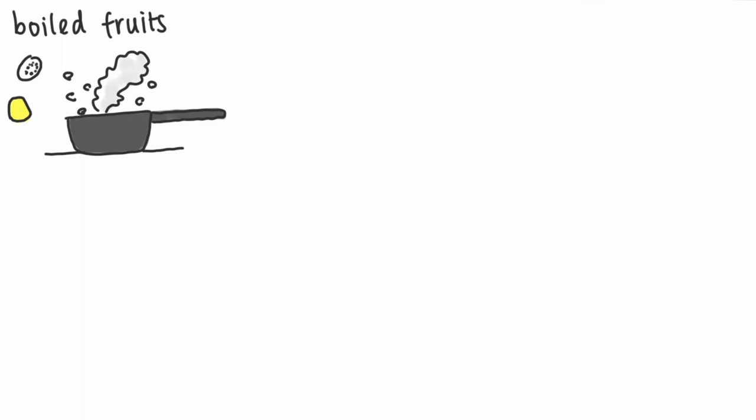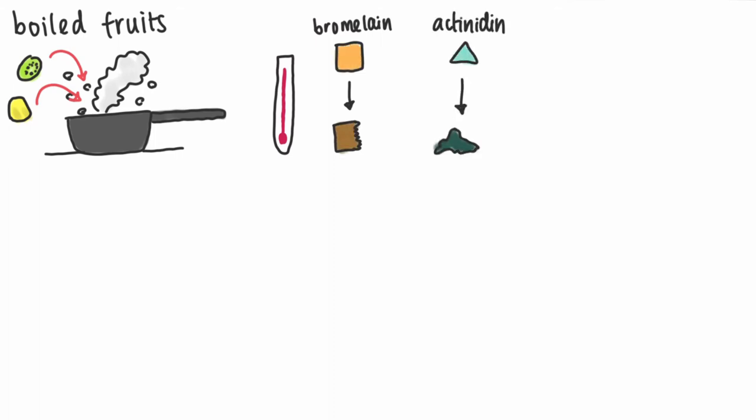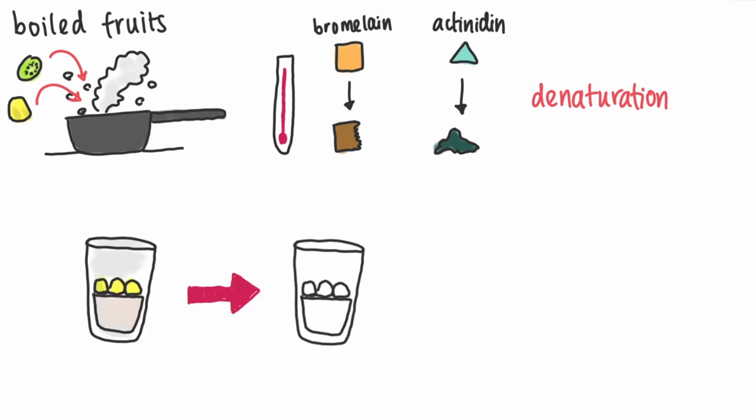What happens when we boil our fruits? At high temperatures, the structure of proteins like enzymes become altered. This process is called denaturation. When these enzymes are denatured, they are unable to perform their biological function, like breaking down proteins. This is why you do not see any changes in the level of gelatin when boiled fruits are added.